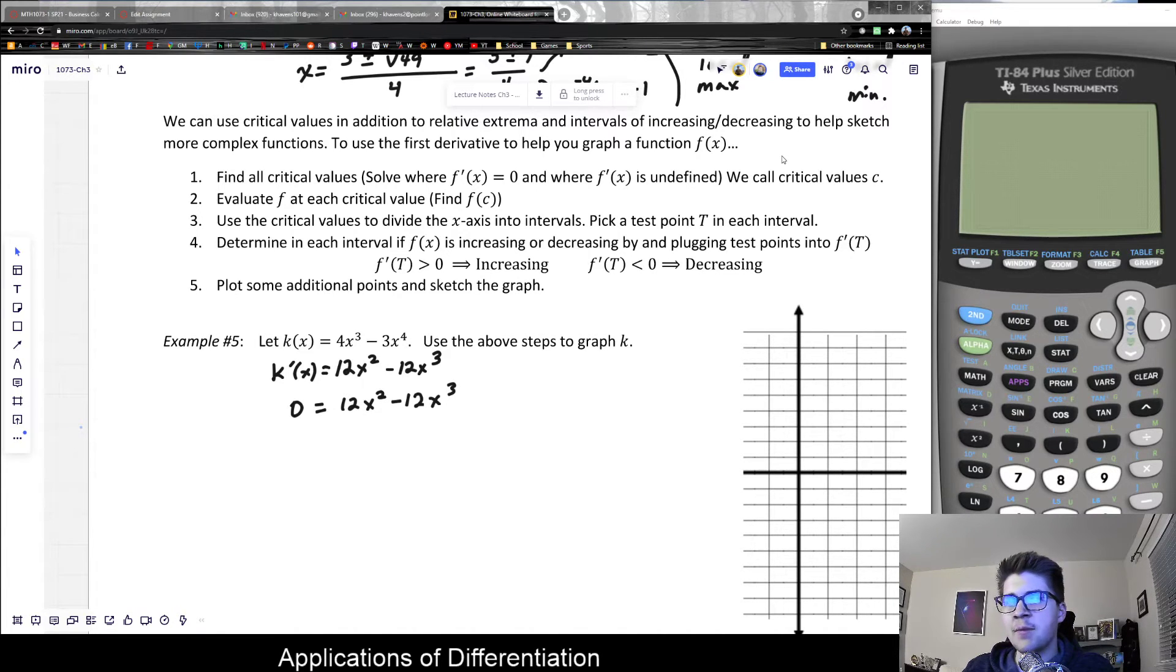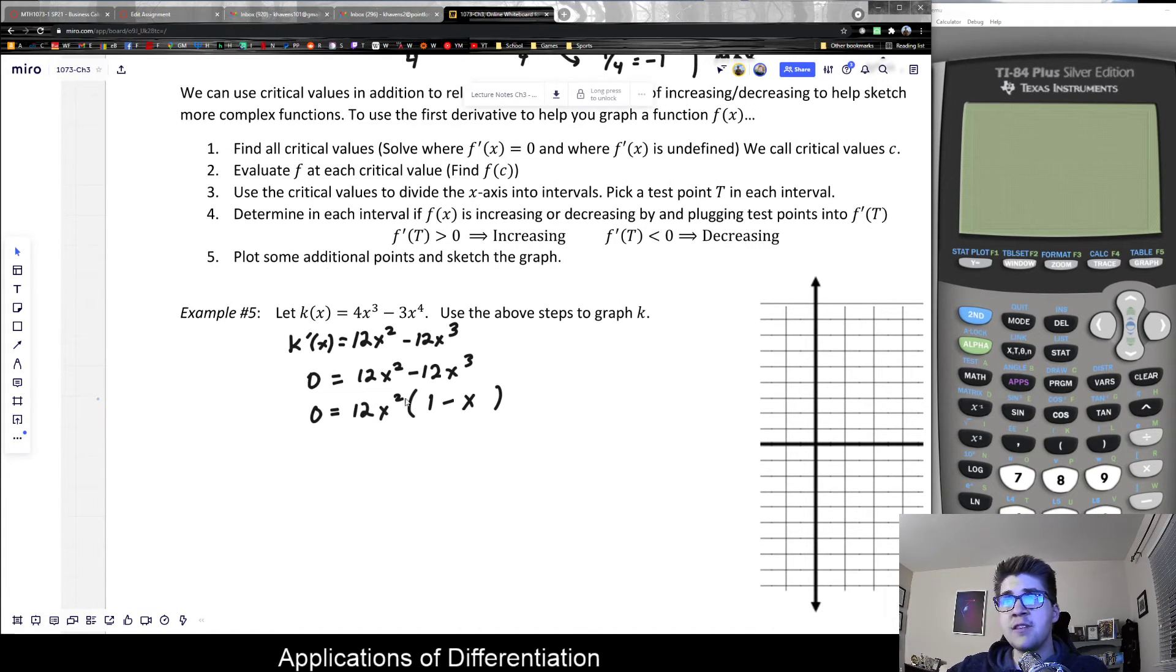Notice there's a common factor of 12 and also x² which we could factor out from the polynomial. This would leave us with 1 - x as the remainder, and that would be our complete factorization. Since we have two factors that involve x, we have two unique zero values or two solutions to this equation.